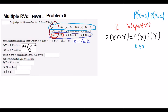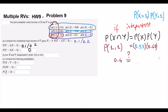We are going to compute the probability that x plus y is greater than 3. So we pick up the values where x plus y is greater than 3: 1 plus 3 is 4, which is greater than 3; 3 plus 1 is 4, greater than 3; 3 plus 2 is 5, greater than 3; and 3 plus 3 is 6, greater than 3. We add those probabilities: 0.05 plus some values, giving a total of 0.30.